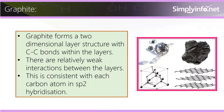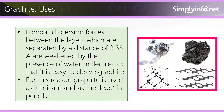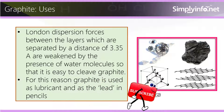Graphite forms a two-dimensional layer structure with C-C bonds within the layers. There are relatively weak interactions between the layers. Graphite uses London dispersion forces between the layers, which are separated by a distance of 3.35 Å, weakened by the presence of water molecules so that it is easy to cleave graphite. For this reason, graphite is used as a lubricant and as the lead in pencils.